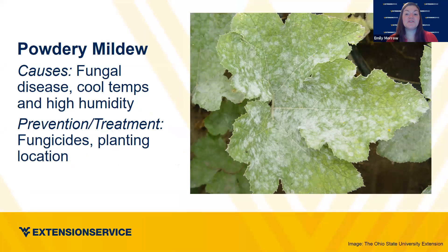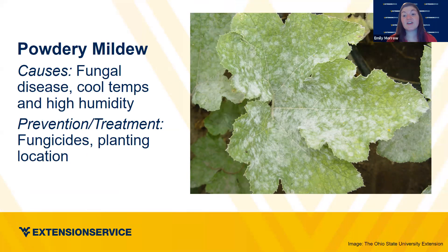Powdery mildew is such a beast. I've checked my garden the night before and it's perfectly fine, and then two days later everything seems infected. This one needs cooler temperatures and high humidity to spore, and it seemingly appears overnight. There are fungicides. The best way to manage it is improving air circulation and ensuring proper spacing between plants, so water can dry off the leaves, which is where the fungus lives.